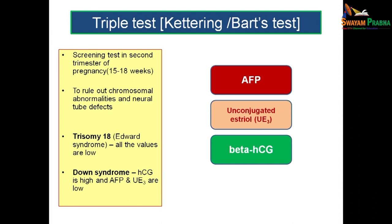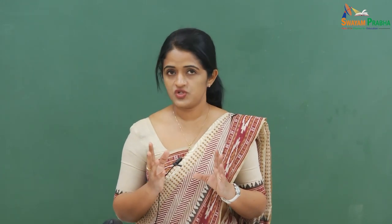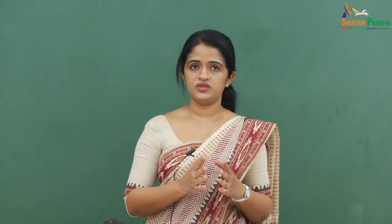In Down syndrome, the beta-HCG level is high while alpha-fetoprotein and unconjugated estriol are both low. This is the interpretation made from the triple test in case of Down syndrome.